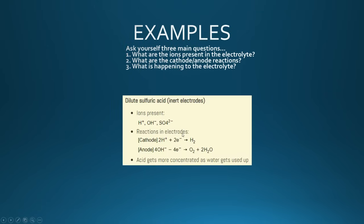In dilute sulfuric acid, you get sulfate ions, hydroxide ions, and hydrogen ions. Hydrogen will be formed at the cathode because that's the only cation. At the anode you'll find oxygen, because first of all this is a dilute solution, and second of all hydroxide ions are lower down on the electrochemical series than the sulfate ions anyway, so hydroxide ions will be discharged rather than sulfate ions. That means the acid will become more concentrated as the hydroxide ions are used up.